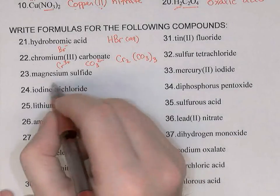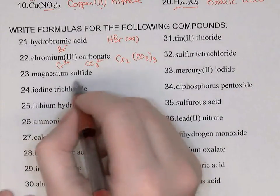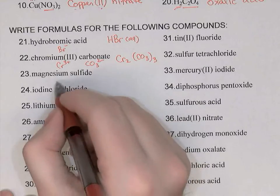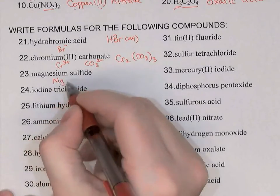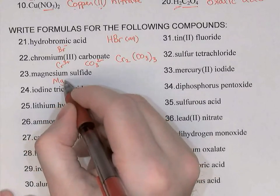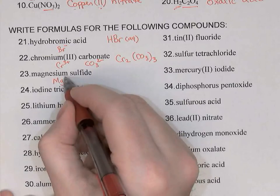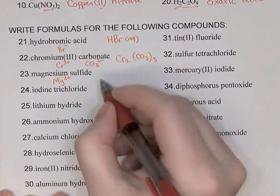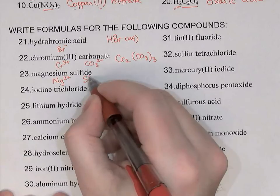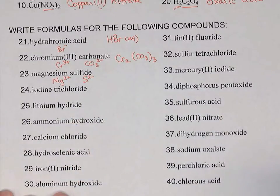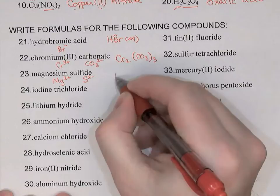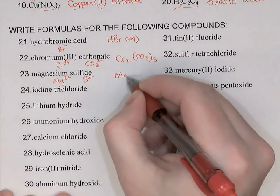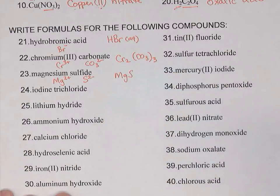Magnesium sulfide is again an ionic compound — metal and non-metal. Magnesium from the periodic table is an alkaline earth metal with a charge of 2+, and sulfide is underneath oxygen so its charge is 2-. 2+ and 2- cancel out, so MgS is the formula.